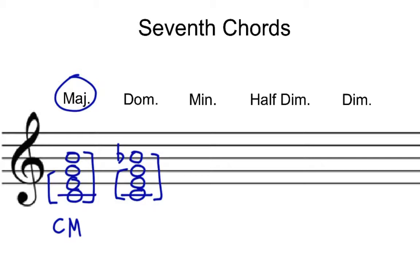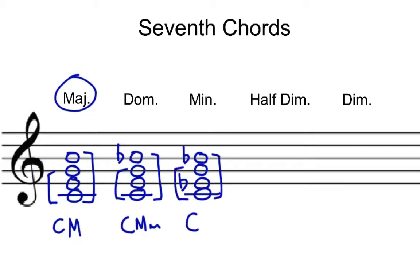Technically it's a C major minor 7 — major triad, minor 7. This next one is just usually called a minor 7. It has a minor triad and then a minor 7 up top. You might call it a minor minor 7, but it's mostly called just a minor 7, just like the previous one with the major triad and the minor 7 is mostly just called a dominant 7, because that's what a dominant 7 looks like.